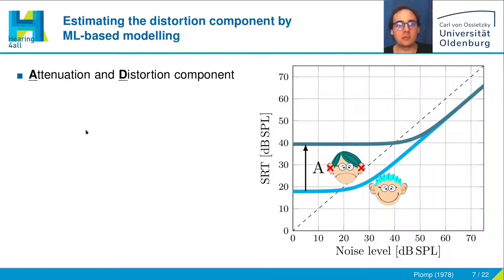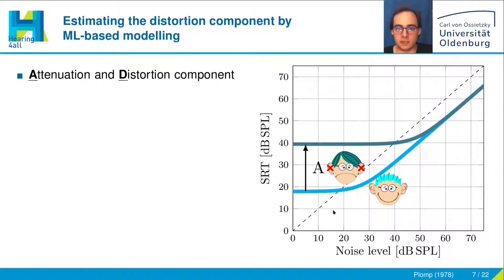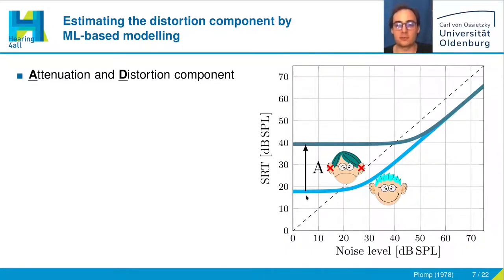Back in 1978, Plump developed the concept of the attenuation and the distortion component. If you depict the SRT in dB SPL on the Y-axis across the noise level in dB SPL on the X-axis, you can see this pattern. The dashed line indicates an SNR of 0 dB. People with normal hearing have no problem understanding speech in calm environments, although their normal hearing absolute threshold defines their listening performance there. But as the noise level increases, the SRT is defined by the noise level.